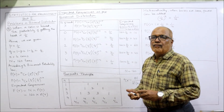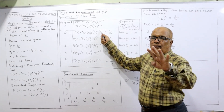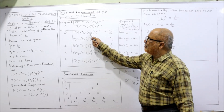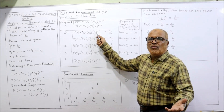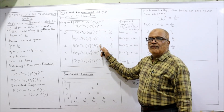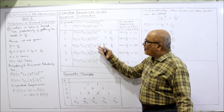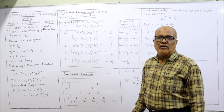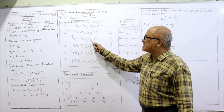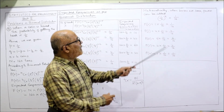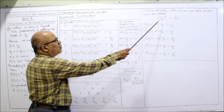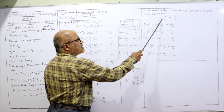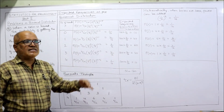Now for the power terms: when bases are the same, powers can be added. Here the base is 1/2 in both terms. So (1/2)^0 × (1/2)^4 = (1/2)^4; (1/2)^1 × (1/2)^3 = (1/2)^4; (1/2)^2 × (1/2)^2 = (1/2)^4; and so on — in all cases we get (1/2)^4. Since 2^4 = 16, this equals 1/16 in every case.